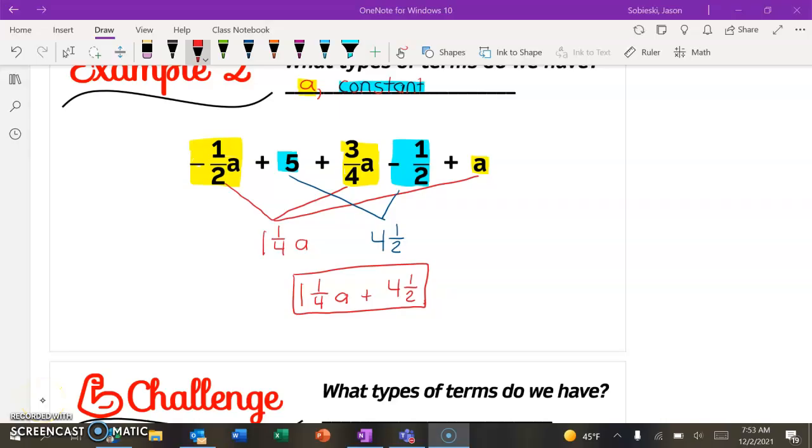All right, so if we highlighted our terms, this is what it looks like it's going to come out to. So we have three terms that are a terms. So if we take negative 1 half a plus 3 fourths a plus a, which is technically a 1a, if there's no number out front, it's really a 1. That would give us 1 and 1 fourth a. And then if you add the constants together, 5 minus 1 half is 4 and 1 half. So that would be our simplified form.